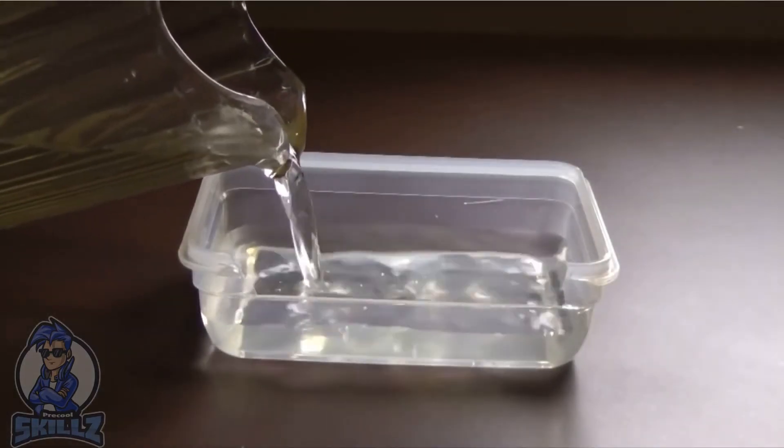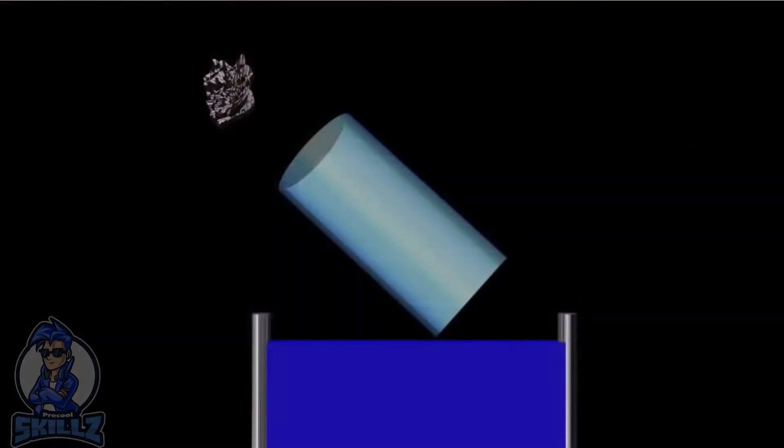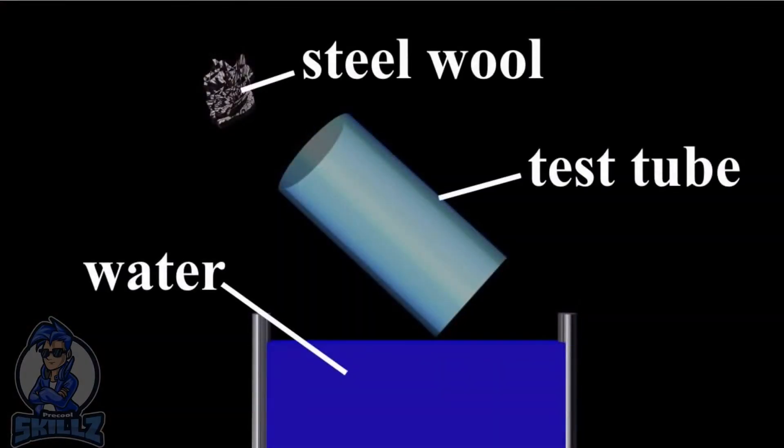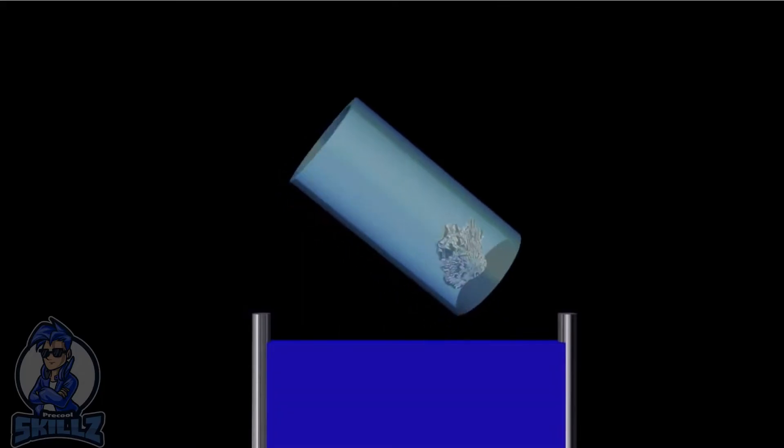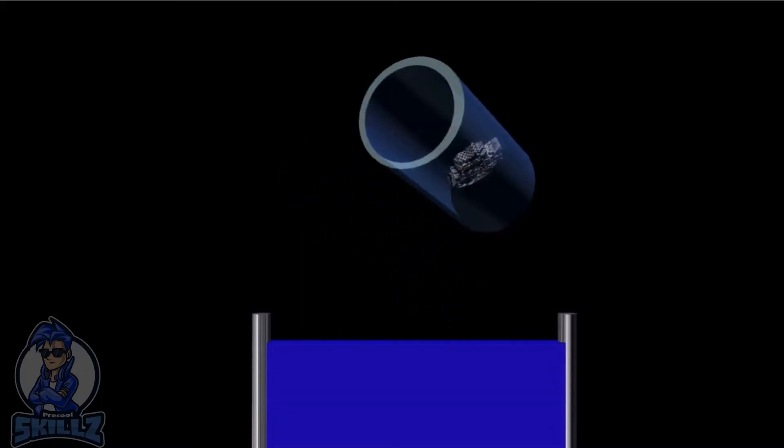The process is simple, as this animation demonstrates. Secure a small piece of damp steel wool in the bottom of the test tube. Rotate the tube and suspend it with the open end submerged in a container of water.